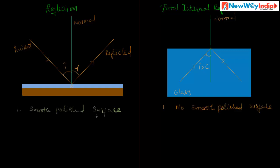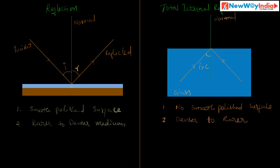The first difference: a smooth polished surface is required for reflection, but no smooth polished surface is required for total internal reflection — it requires only a denser medium and a rarer medium. The second difference: for reflection, light should pass from the rarer medium to the denser medium. For total internal reflection, light should pass from the denser medium to the rarer medium.